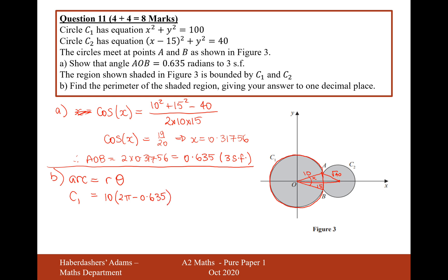Typing that into the calculator: 10 times (2π minus 0.635) gives us 56.48.